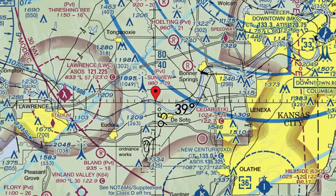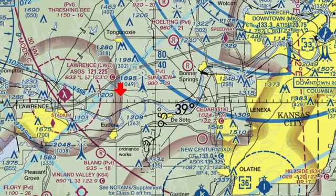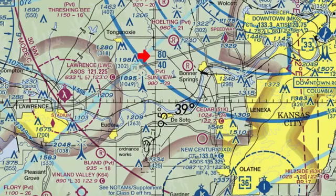Degrees are subdivided into smaller increments called minutes — and don't get confused, these minutes measure distance, not time. There are 60 minutes in each degree. Minutes are shown on the lines of latitude and longitude as small tick marks. Every fifth tick mark is slightly larger, and every tenth mark is larger still, making it easier to count them on the chart. Counting the tick marks, this shows the latitude of 39 degrees one minute north, here's 39 degrees five minutes north, and here's 39 degrees ten minutes north.